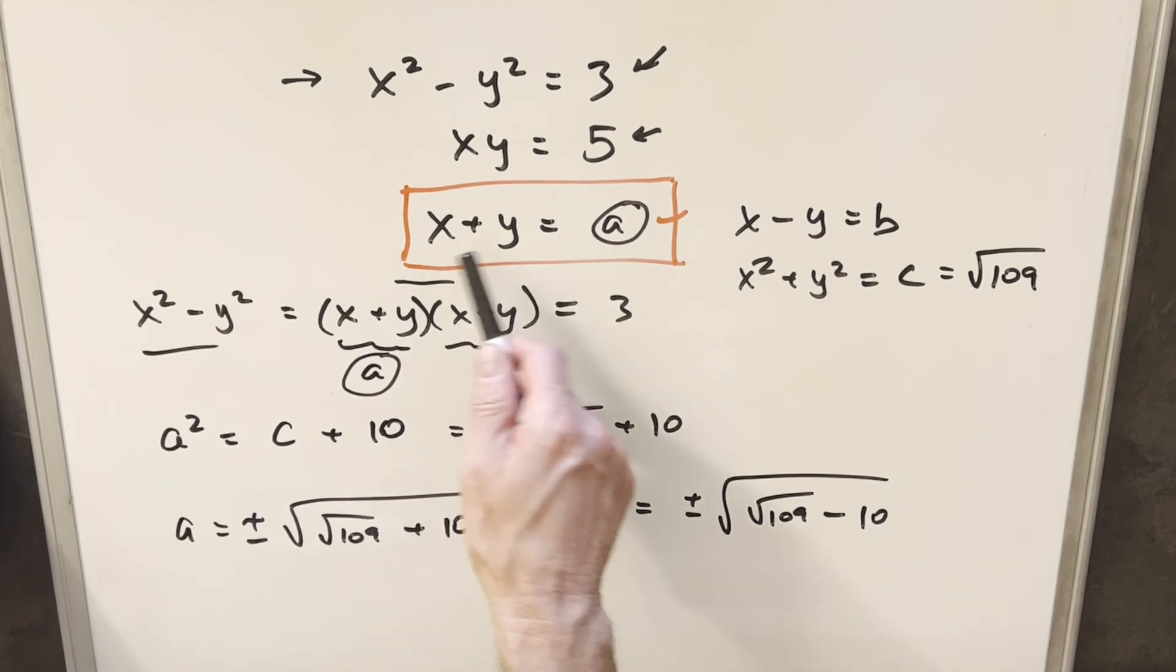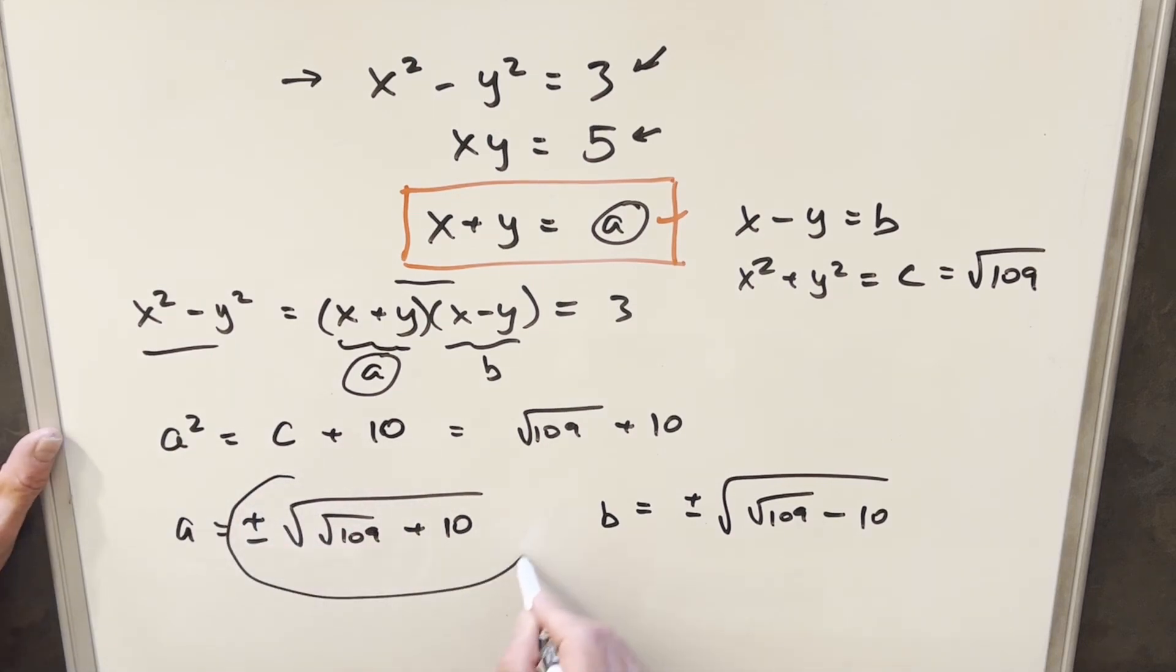And with this, you could actually get an x and y answer pretty easily. It's just going to be like a decimal answer. So anyway, that's our solution. We're just going to have plus or minus square root of square root of 109 plus 10. And that's it.